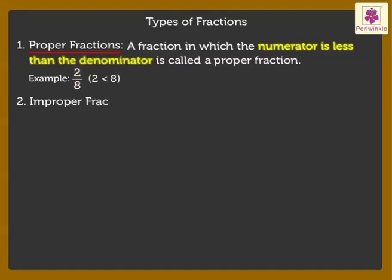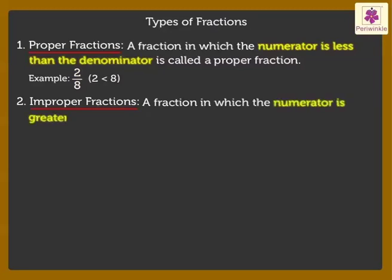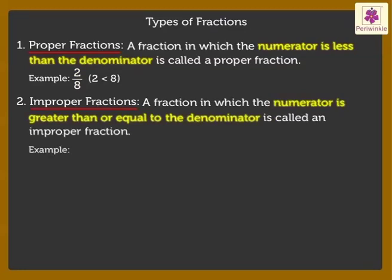2. Improper Fractions: A fraction in which the numerator is greater than or equal to the denominator is called an improper fraction. For example, A: 5 is greater than 2, thus 5 upon 2 is an improper fraction. B: 4 is equal to 4, thus 4 fourth is also an improper fraction.